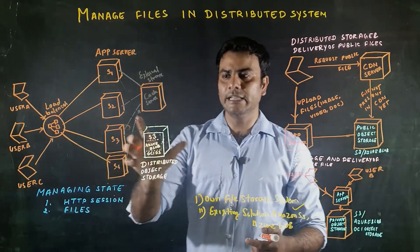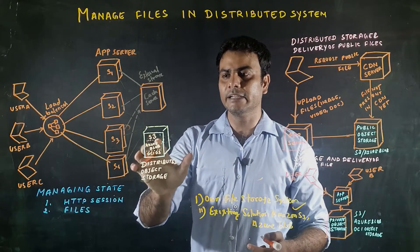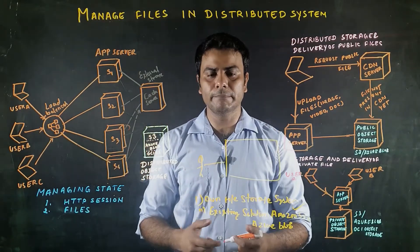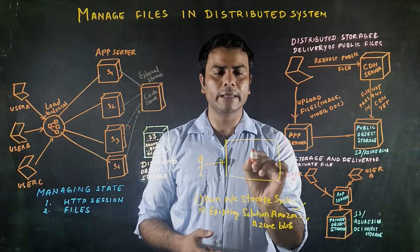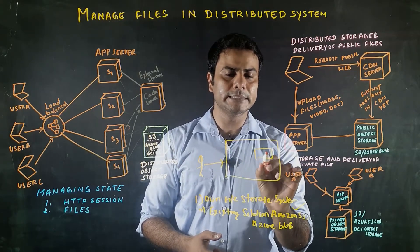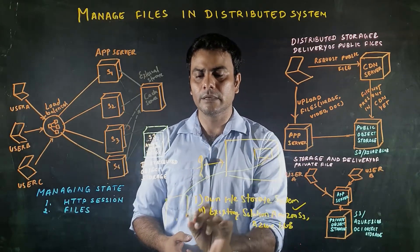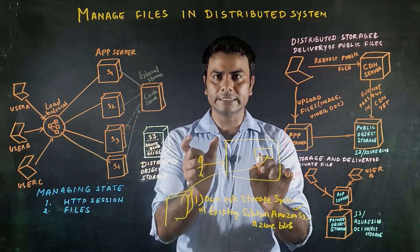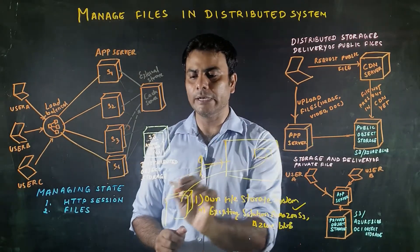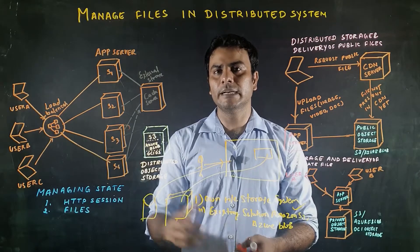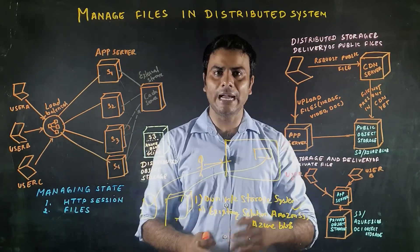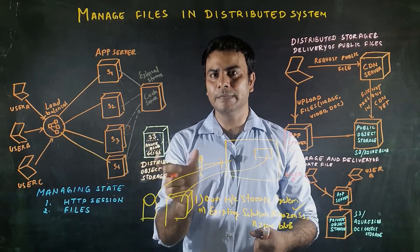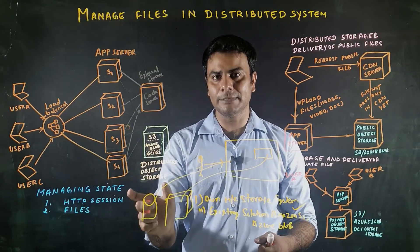Instead of building our own system, we can use S3 or Azure Blob for storing our files. When we design the application, we can use S3 to store all kinds of files. Whenever a user uploads a file, it will be stored in S3, and the corresponding S3 path needs to be stored in the database. Whenever another user wants to access that file, they can locate it using the S3 path stored in the database.